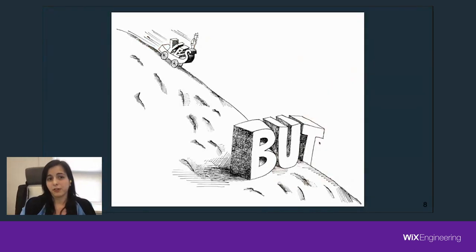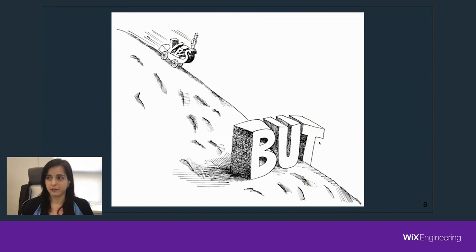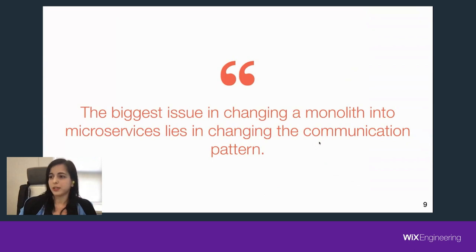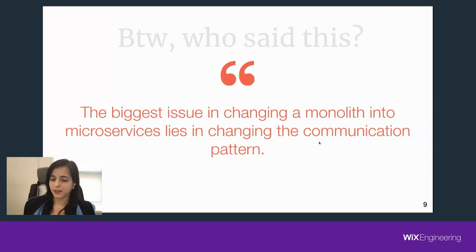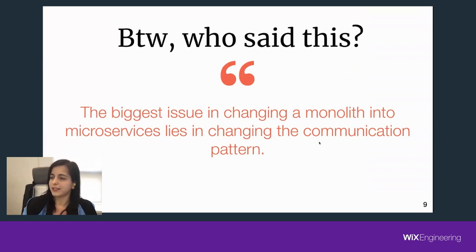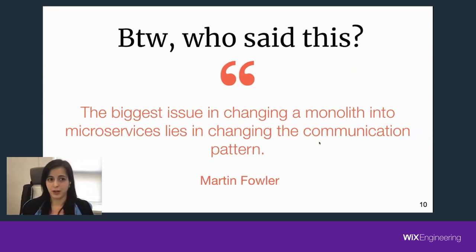But we cannot talk only about the pros of microservices — there are a lot of problems caused by using microservices that we didn't have in a monolith. There is one big problem I want to talk about today: communication. The biggest issue in changing the monolith into microservices lies in changing the communication pattern. It's not my words — it was said by Martin Fowler, a very smart guy who has written a lot of different articles about monolith and microservices, including one of the most famous: how to refactor a monolith into microservices.